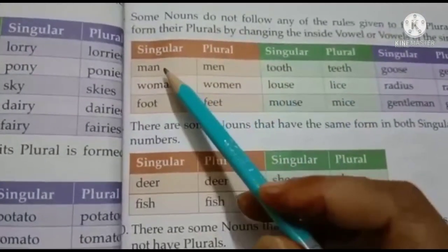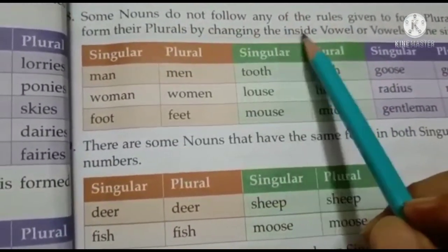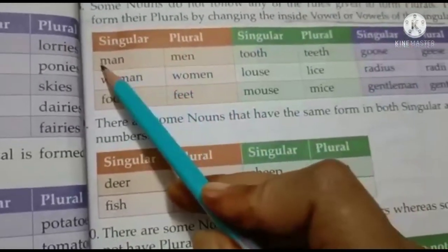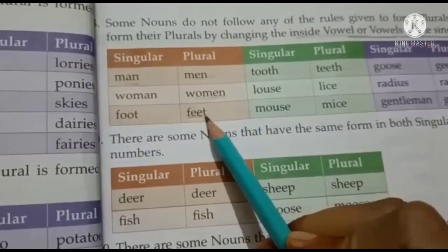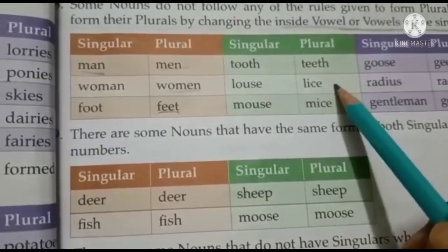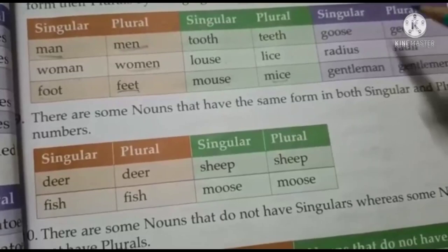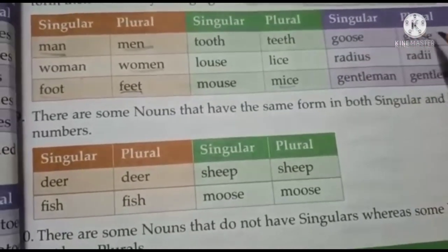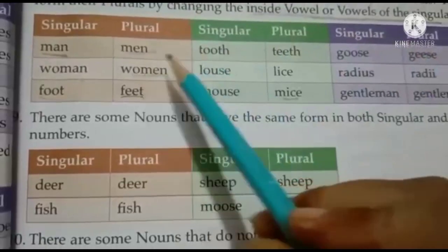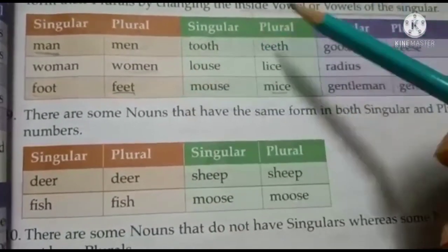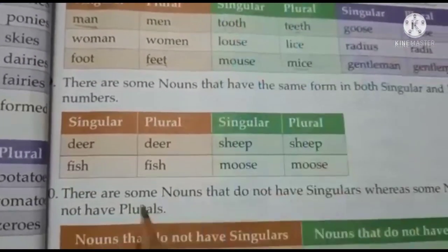Apart from that, some words change completely — they do not follow any rules. These nouns form their plurals by changing the inside vowel: man → men, woman → women, foot → feet, tooth → teeth, louse → lice, mouse → mice — we don't say 'mouses'. Also: goose → geese, radius → radii, gentleman → gentlemen. These words don't add 's'; instead they change the inside vowel.